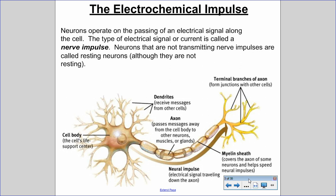When we talk about neurons and synapses, we're really talking about what is called an electrochemical impulse. Neurons basically operate on the passing of an electrical signal along the cell. This type of electrical signal or current is called a nerve impulse, or sometimes an action potential — nerve impulse and action potential mean the same thing.